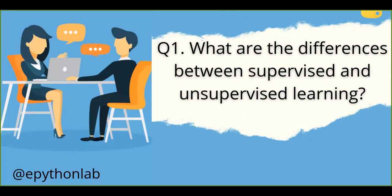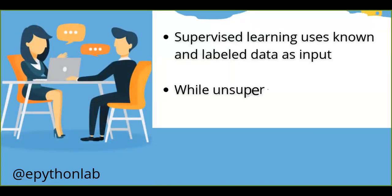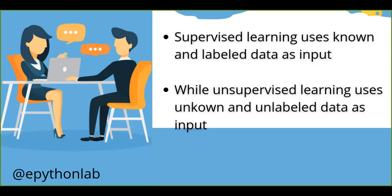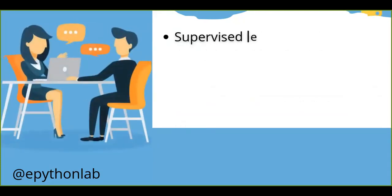The first difference is that supervised machine learning uses known and labeled data as input, while unsupervised learning uses unknown and unlabeled data as input. From labeled data we can predict future outcomes, but in unsupervised learning we discover new patterns from unlabeled or unknown data. That is the common difference between supervised and unsupervised machine learning.